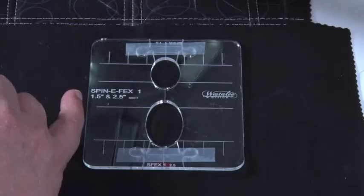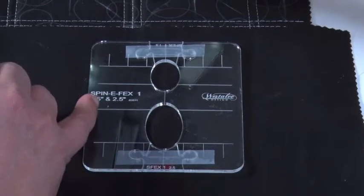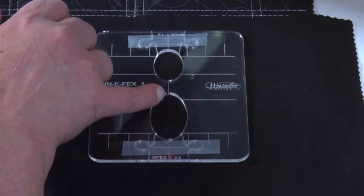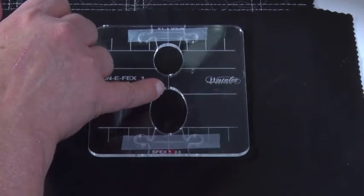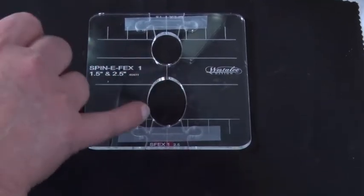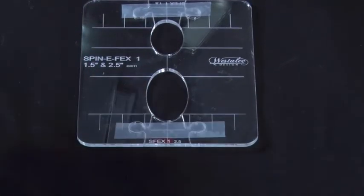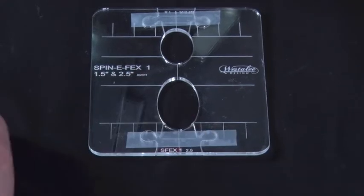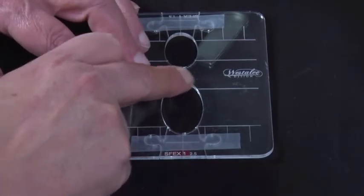On our tools we have a number of reference lines. The line that runs across here and here is where our stitch will end. So we can use that if we want to put it on a border and run it across the border to make sure it touches in the same place.